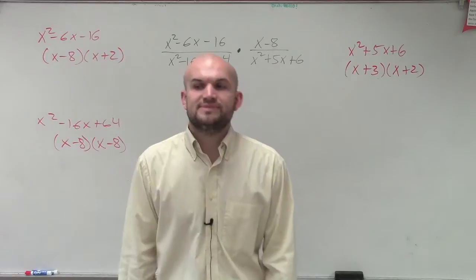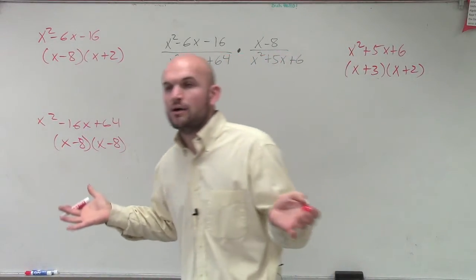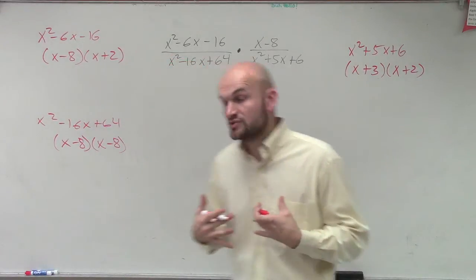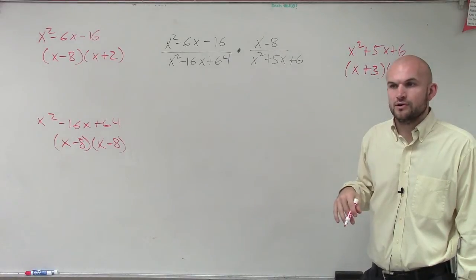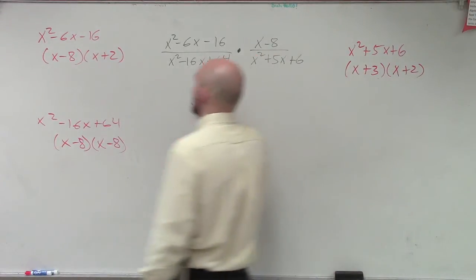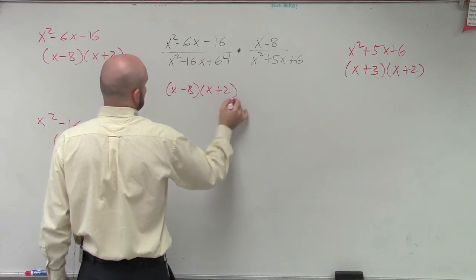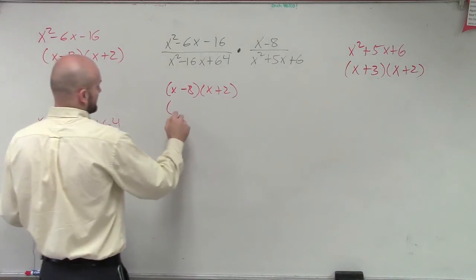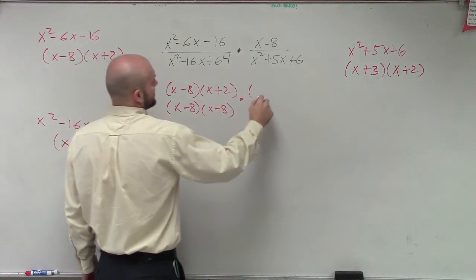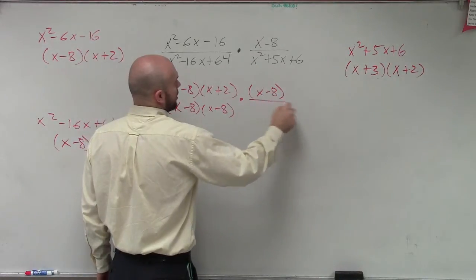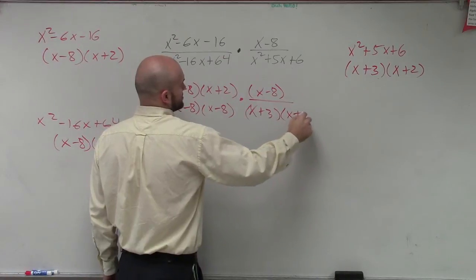So now, all I'm simply going to do, do you guys see how I factored this out? It wasn't anything crazy, it was stuff we've already done. But now what I'm going to do is I'm going to substitute in our factored forms for each one of our polynomials that we have. So I have x minus 8 times x plus 2 divided by x minus 8 times x minus 8 times x minus 8 over x plus 3 times x plus 2.